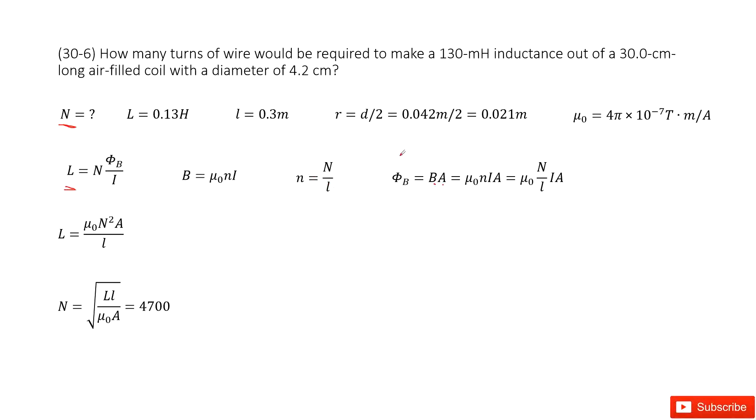So we input this n inside, and then we put the B in there. We can write the phi B in this form.